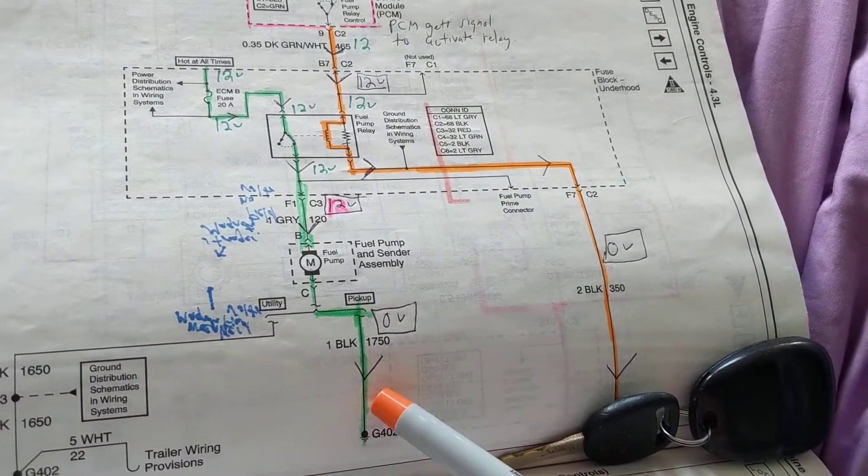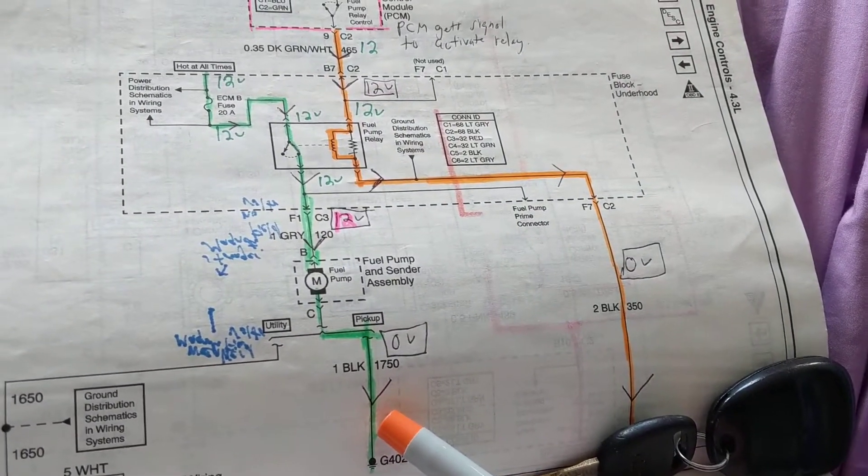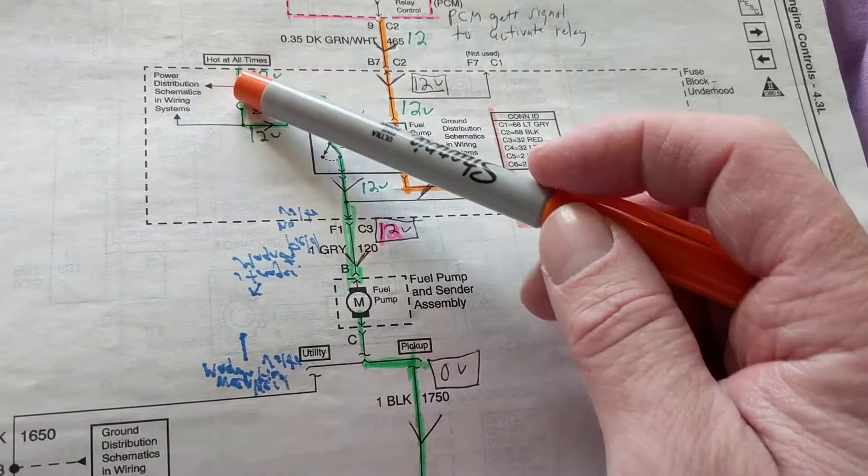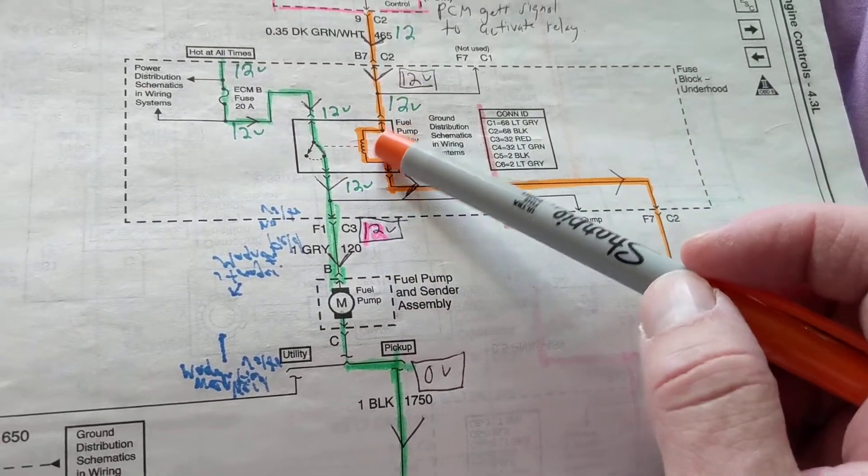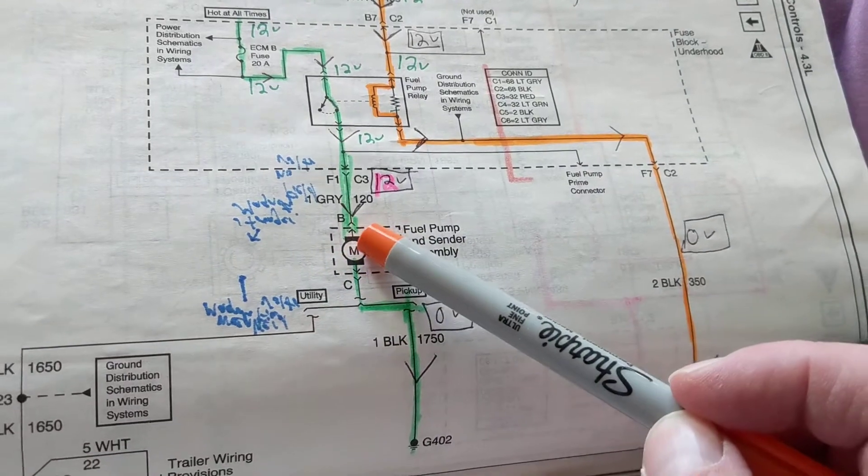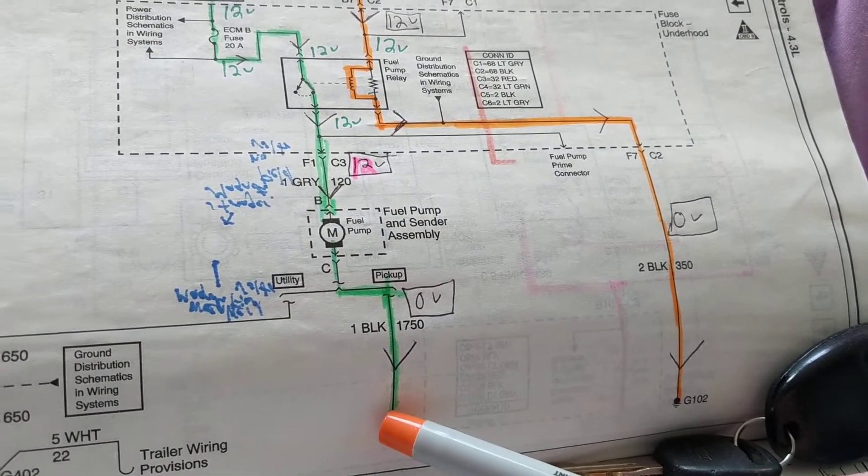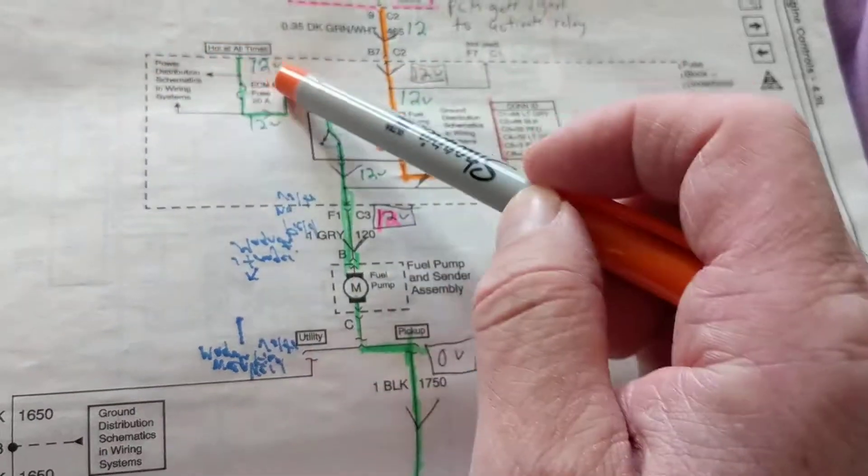On this side we don't have the computer controlling anything over here. As you can see, it's just pure - the fuse, the 12 volts. This is activated as we know from this, and then fuel pump is activated over here going through ground back to the battery.